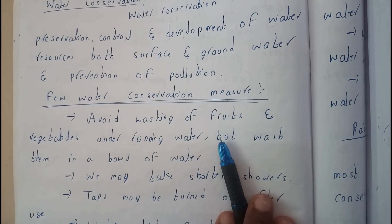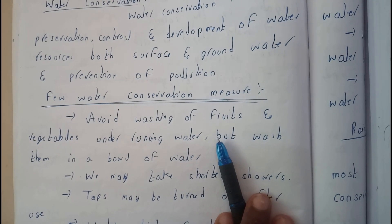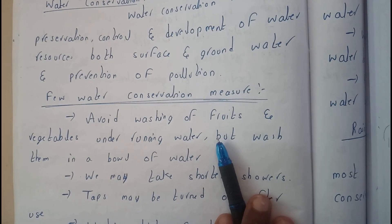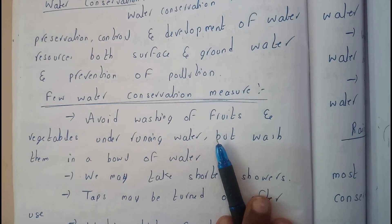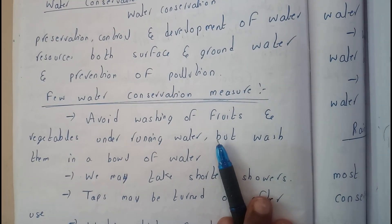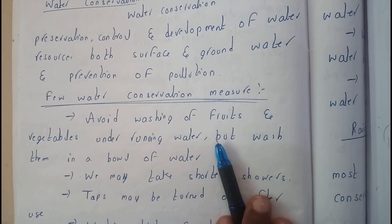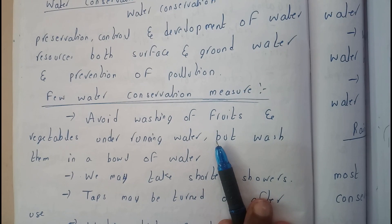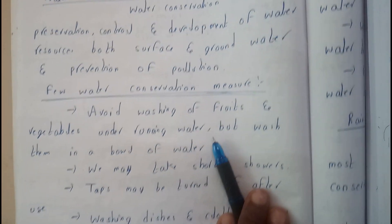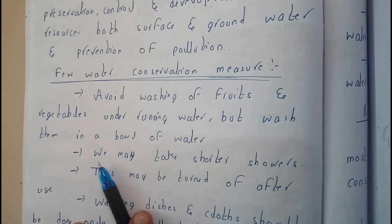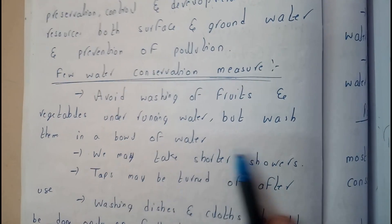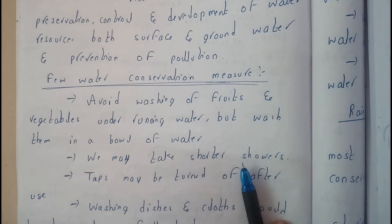Don't just turn on your tap and wash vegetables or fruits. You can fill water in a bowl, dip them in, and clean them. That's the best way to save water. The next measure: we may take short showers.